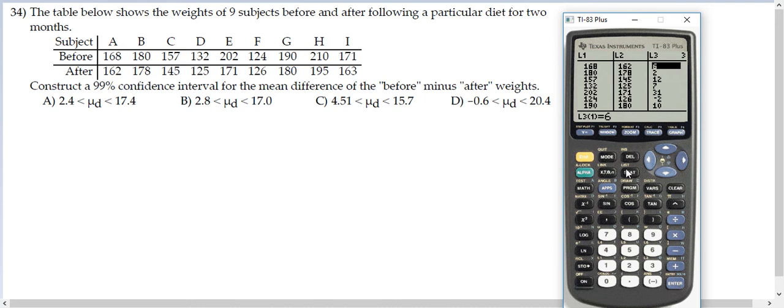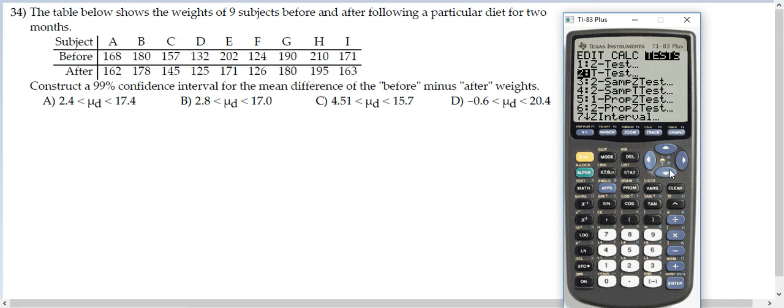Since this is matched pairs, remember: if it's a hypothesis test, we do T test. If it's an interval, we do T interval. So we're going to go down to the option for T interval. Remember, matched pairs is always T test or T interval, depending on whether it's a hypothesis test or a confidence interval.